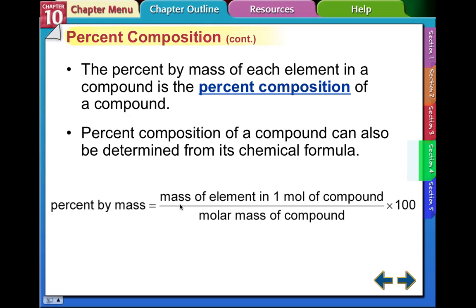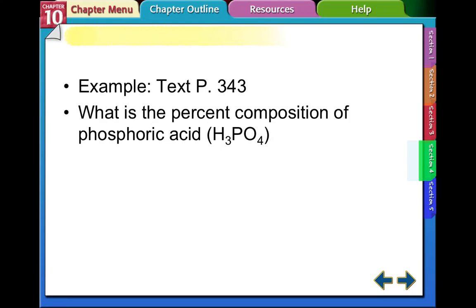Percent by mass equals the mass of the element in one mole of the compound over the entire molar mass of the compound. Now we're looking at the percent by mass. If you turn to page 343 in the textbook, we're going to go through this example: what is the percent composition of phosphoric acid? We're looking at the percent of each element — hydrogen, phosphorus, and oxygen.